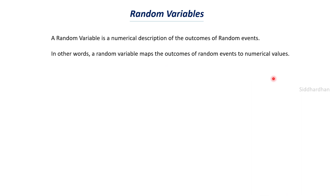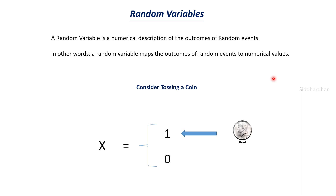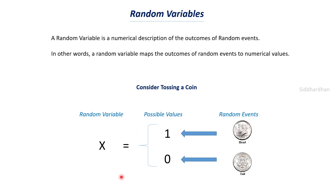We need to assign some numerical value to the random events that can happen. For example, let's say that we are tossing a coin. Let's say x is the random variable. We can say x is equal to 1 if the coin lands on heads, and x is equal to 0 if we get tails. Here x is the random variable, 1 and 0 are the possible numerical values, and heads and tails are the random events.